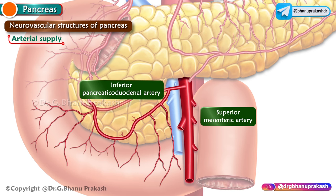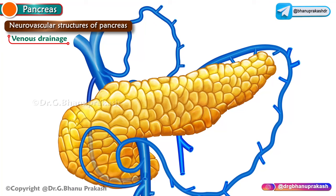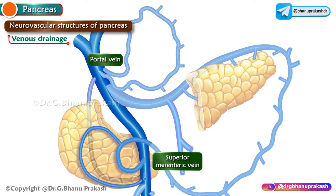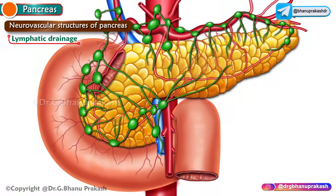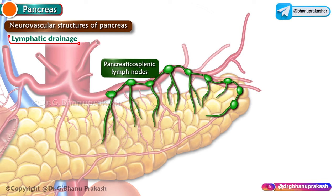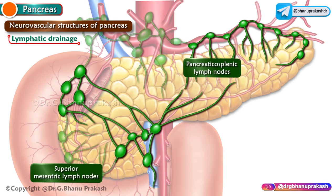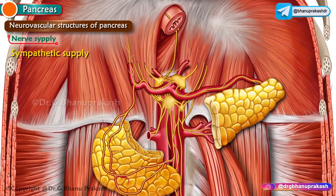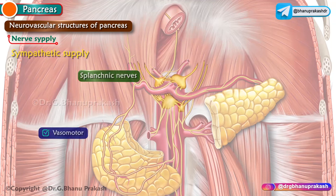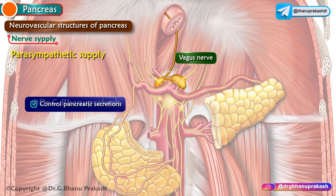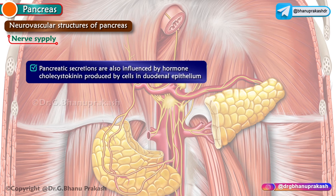Venous drainage of the pancreas is into the portal vein, superior mesenteric vein, and splenic vein. Pancreatic lymph vessels follow the arteries; most end in the pancreaticoosplenic lymph nodes along the splenic artery, while some end in the pyloric lymph nodes. Efferent vessels drain to the superior mesenteric or celiac lymph nodes. The sympathetic nerve supply is from the splanchnic nerves, which are vasomotor in nature, and the parasympathetic supply is from the vagus nerve, which controls pancreatic secretions. These secretions are also influenced by the hormone cholecystokinin, produced by cells of the duodenal epithelium.